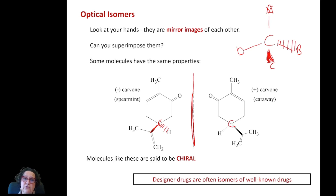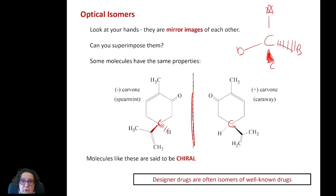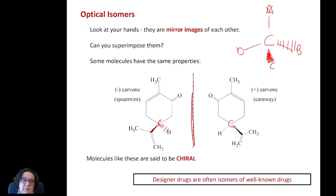We also call them optical isomers. They have the same molecular formula — because they are isomers — and the same arrangement of bonds, but spatially they are different: they are mirrors of each other. This is very important, especially in a biological or pharmaceutical context.